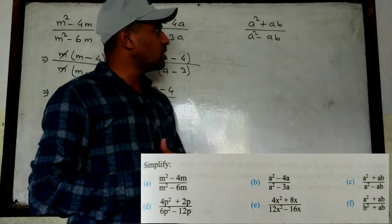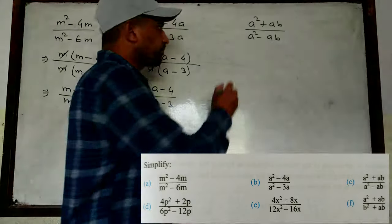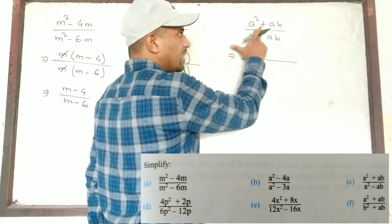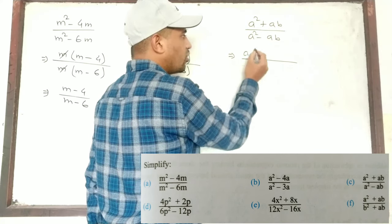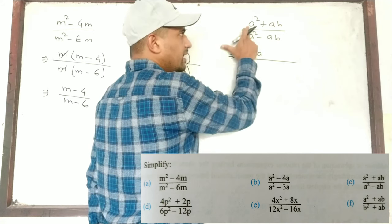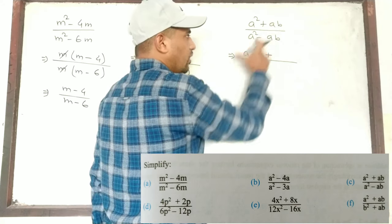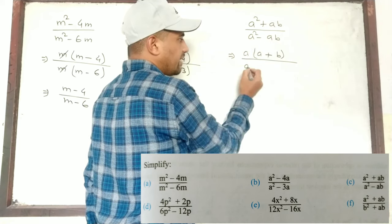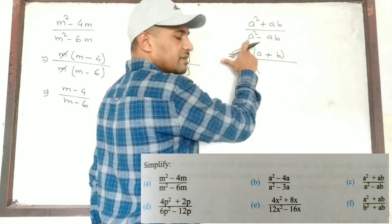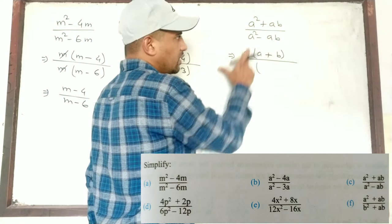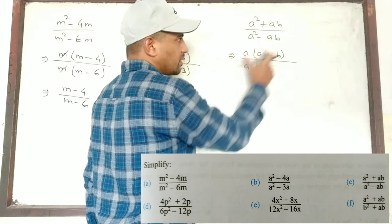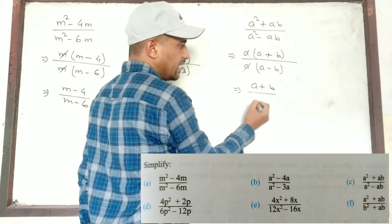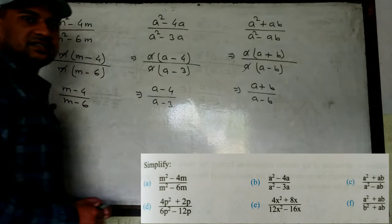Look at this one: the question is (a² + ab) / (a² - ab). In the numerator, what is the common? From a² + ab, a is common. So we take a common: remaining is a + b, because a is already common so remaining is b. Similarly a² - ab: take a common. Remaining is a - b. a and a cancel, so the answer is a + b by a - b. Hope you understand these three questions.